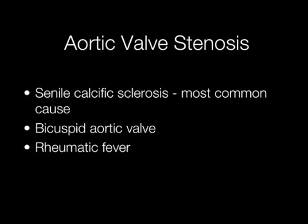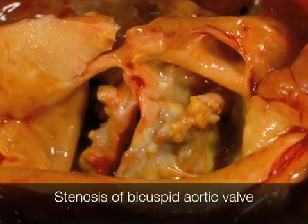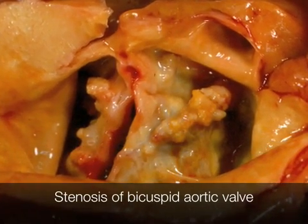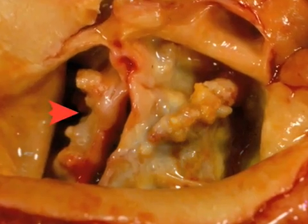Aortic valve stenosis may be due to senile calcific sclerosis — the most common cause — a bicuspid aortic valve, and rheumatic fever. This is an example of a calcified stenotic bicuspid aortic valve.